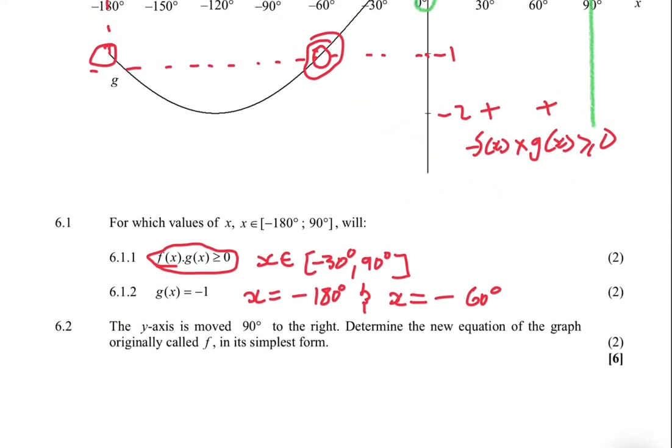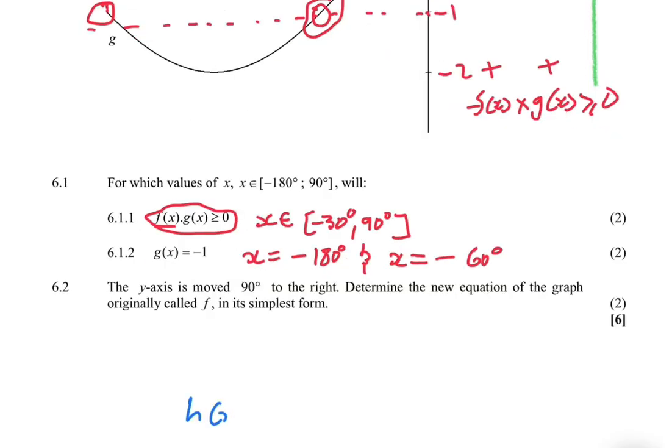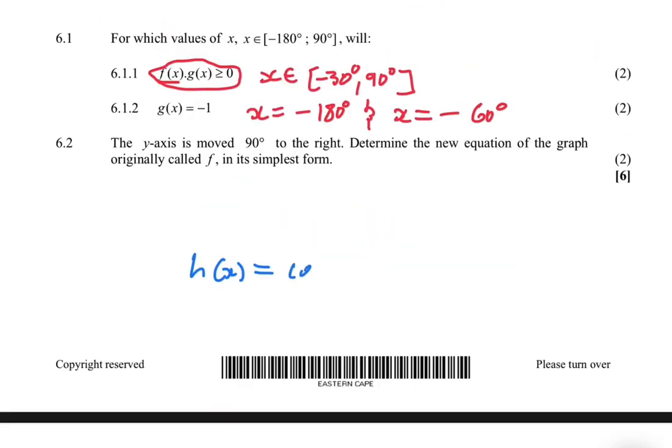Moving the y-axis to the right simply means that we're moving the graph to the left. In standard format, if you have a graph h(x) = cos(x + k) + q: